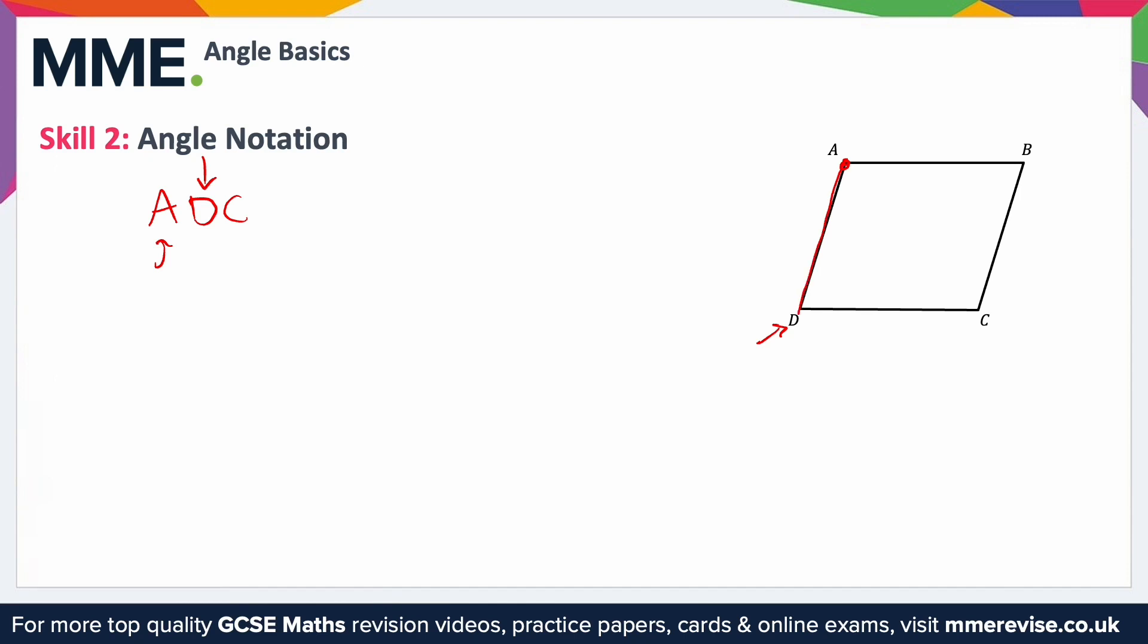So it's the angle there formed by the two lines but we know it's at the middle letter which is D. We could also write this as a little angle symbol and then ADC or ADC like this with the little symbol on top of the middle letter to indicate the angle. All three types of notation are perfectly acceptable.